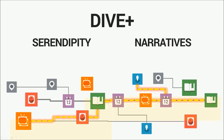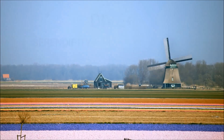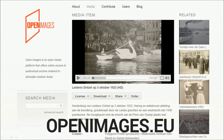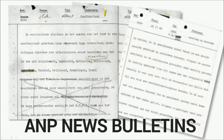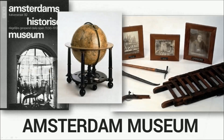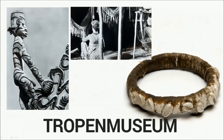Currently, Dive Plus works on four various cultural heritage collections from the Netherlands available as linked open data. These include Dutch news broadcasts from the Netherlands Institute for Sinovision, radio news bulletins from the Dutch National Law Library, cultural heritage objects from the Nebster Museum, and cultural heritage objects from the Tropen Museum.